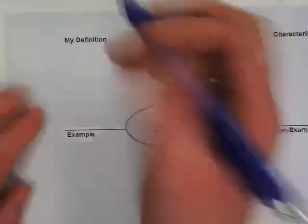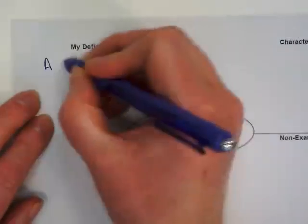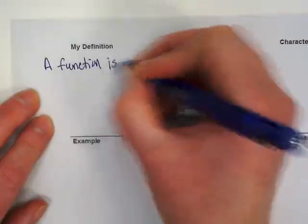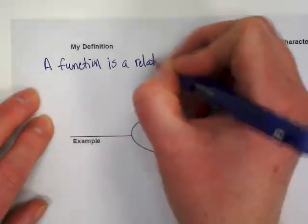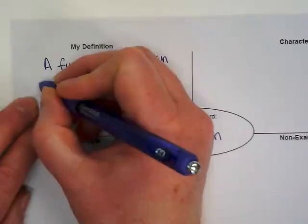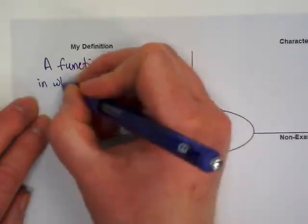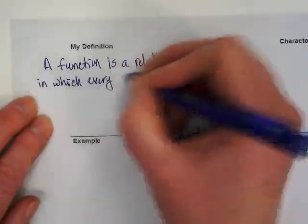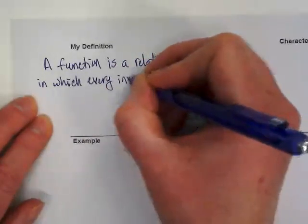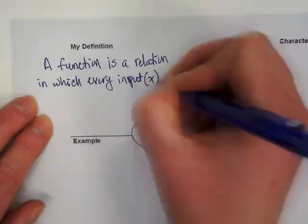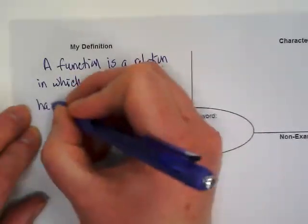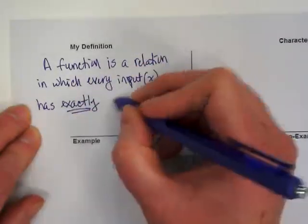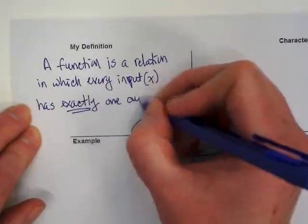Here's the definition: a function is a relation. Here comes the difference: in which every input x has exactly one output y.